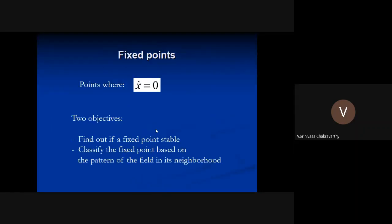Now consider what are called fixed points, also called stationary points or critical points. For the equation x-dot = Ax, x = 0 is a fixed point because when x = 0, x-dot is also zero — so if you start there, you won't move. The key question is stability: if perturbed away from that point, will you return to it or move further away?